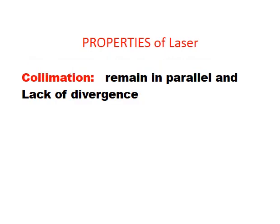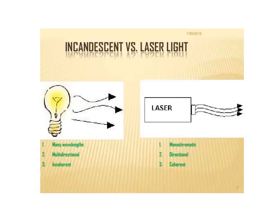Another property is collimation. Laser beam remains collimated, meaning the beams remain parallel and do not diverge much, so energy can be propagated over larger distances. This collimation occurs due to spatial coherence - you can say collimation is a consequence of spatial coherence. In contrast, ordinary light has many wavelengths, is multidirectional and incoherent.